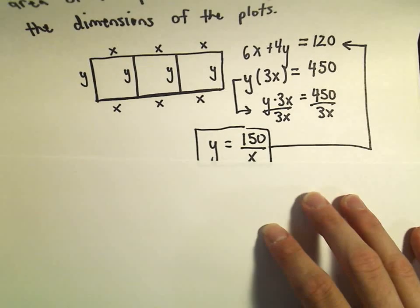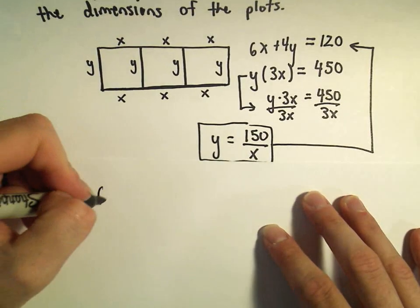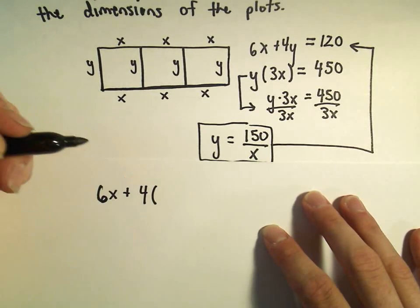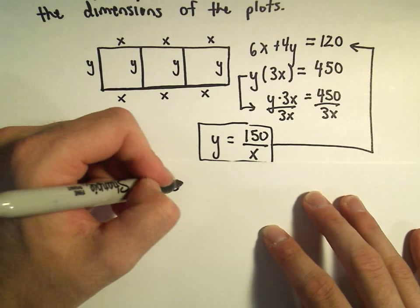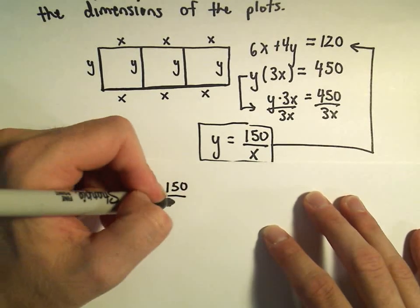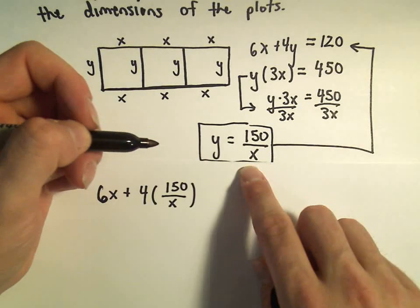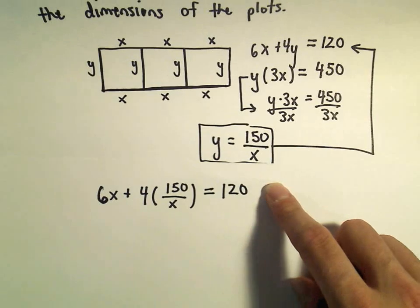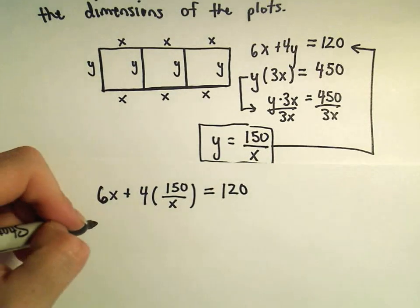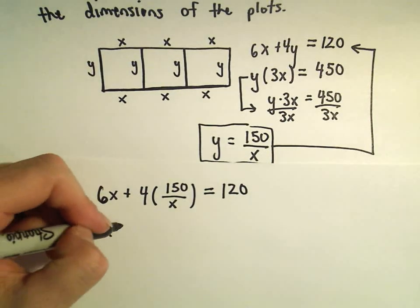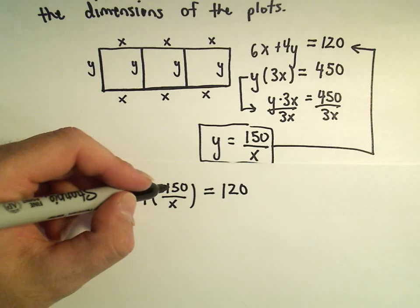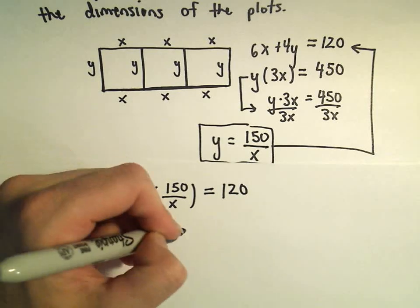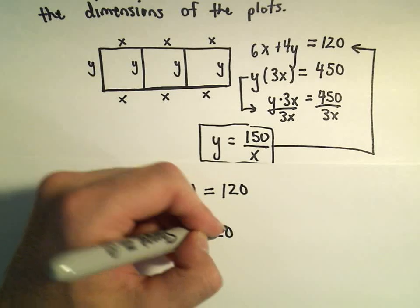We said it was 6x plus 4 times y. But y now has the value 150 over x. And that's going to be equal to 120. So we have 6x, and if we take 4 times 150, that's going to give us 600 divided by x, equals 120.